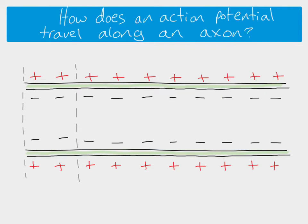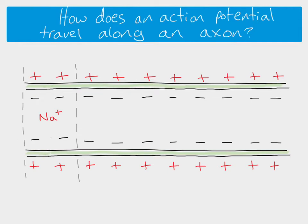Taking one section at a time: this section is where the action potential is initiated, where it first starts off. There's an influx of sodium ions into the axon, and as soon as that happens, this part of the membrane is depolarized. If it depolarizes enough, we'll see a reversal in charge so that we now have a more positive inside compared to the outside, meaning an action potential is taking place. The red here represents that there's an action potential happening in this section.